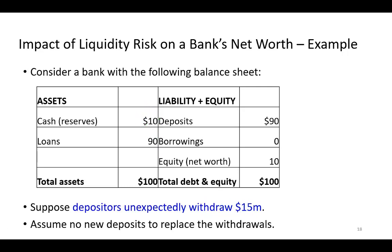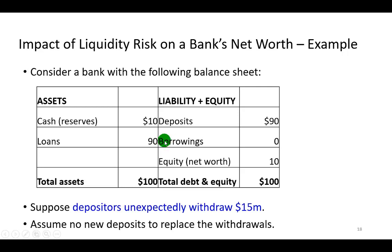Now, if the bank is unable to borrow new monies, then it could be forced to sell some of its long-term loans — perhaps at a fire sale, meaning at a fraction of their face value — in order to quickly raise the cash.